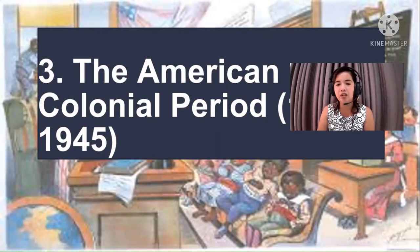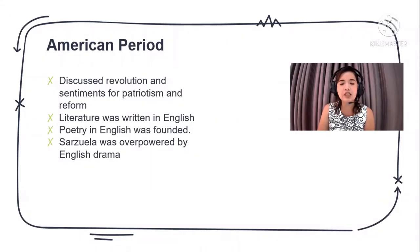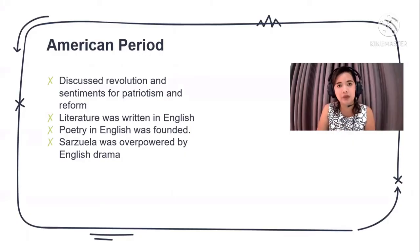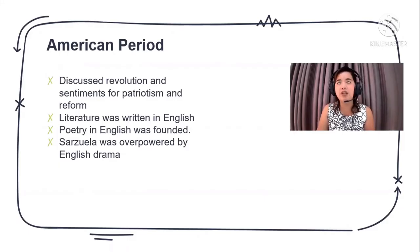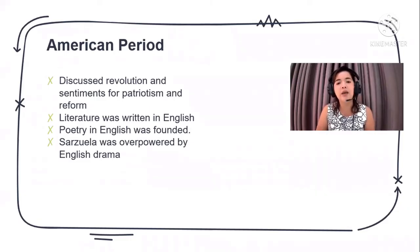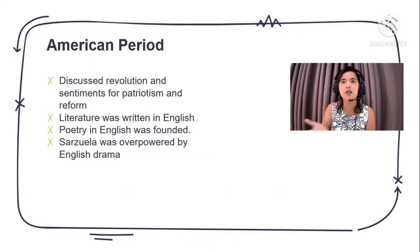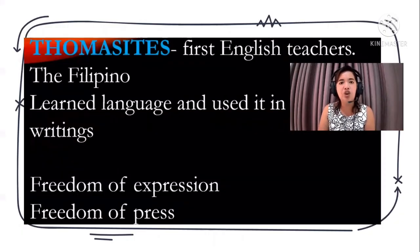After the Spaniards, the Philippines was sold to the Americans. The American colonial period discussed revolution and sentiments for patriotism and reform. The Thomasites taught Filipinos the English language, so literature was written in English. Filipino writers welcomed the use of English in writing. Poetry in English was founded and sarsuela was overpowered by English drama — similar to the moro-moro, wherein plays were performed with stories, but now replaced by English drama, which is still present in the contemporary period.